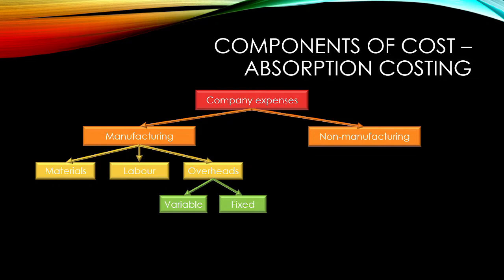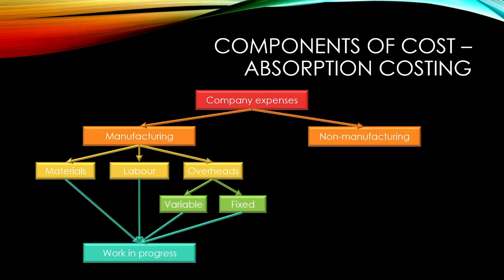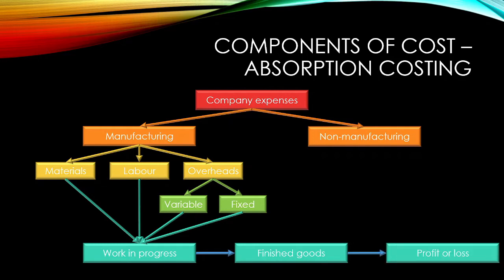When costing a product under absorption costing, all of our manufacturing costs — that is materials, labor, variable overheads, and fixed overheads — are capitalized to our product. Once the product is complete, it gets transferred to the finished goods, and once sold, the cost is transferred to profit or loss. For our non-manufacturing costs, which could include selling, administration, and other similar costs, these are not capitalized to our product, but are rather expensed immediately to profit or loss.